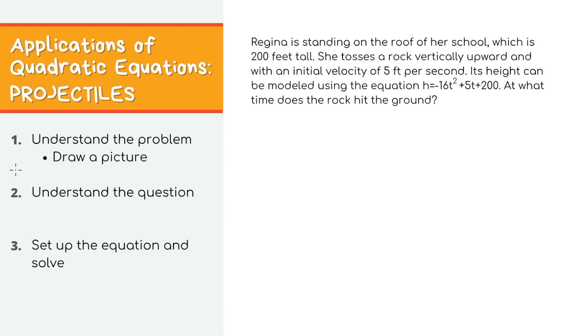The first thing we need to do is understand the word problem itself. A lot of times it's useful to draw pictures to help you visualize. So we have this girl, Regina, and she's standing on top of a building 200 feet off the ground. And she decides to, for whatever reason, toss a rock upwards with an initial velocity of 5 feet per second. And the equation of the rock's height is modeled in this expression here. If you imagine a parabola, this is the rock's path where t stands for time and h stands for height.